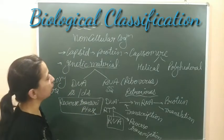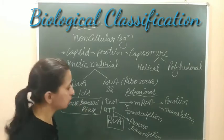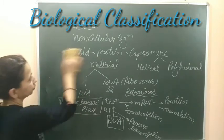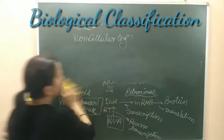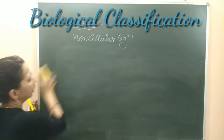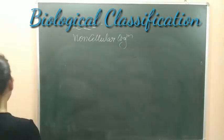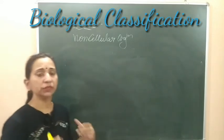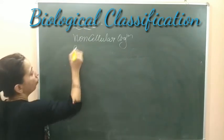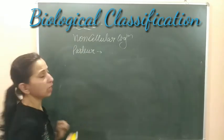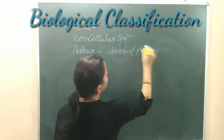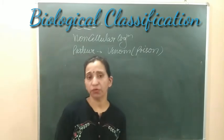Now let's discuss some important historical background about viruses. Viruses are non-cellular particles which remain inert outside the host. The name 'virus' was given by Pasteur, and the word virus came from the word 'venom,' which means poison. So these were considered poisonous substances, and that is why the name 'virus' was given by Pasteur.